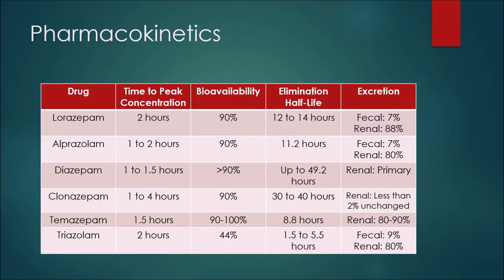Keeping those two defined terms in mind, let's look at the pharmacokinetics of six different benzodiazepines. In this list we'll cover lorazepam, alprazolam, diazepam, clonazepam, temazepam, as well as triazolam. We'll look at the time to peak concentration, the bioavailability, the elimination half-life, as well as excretion.